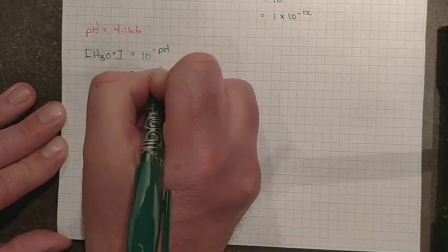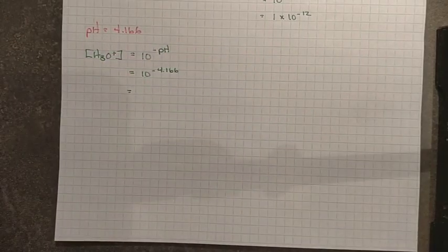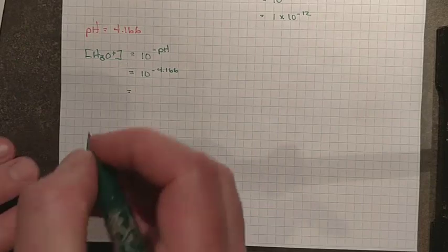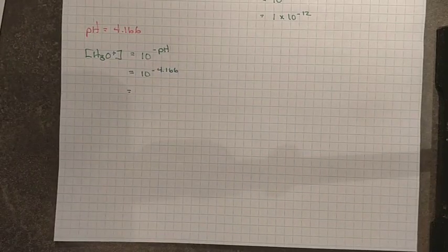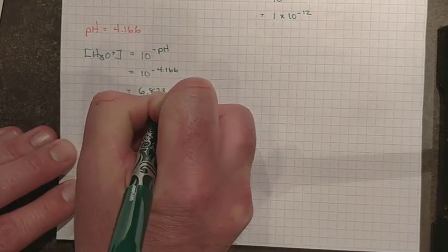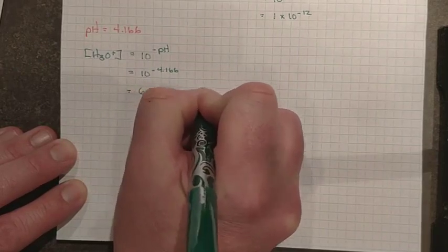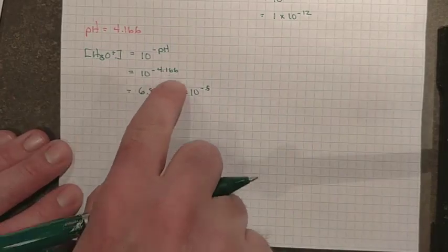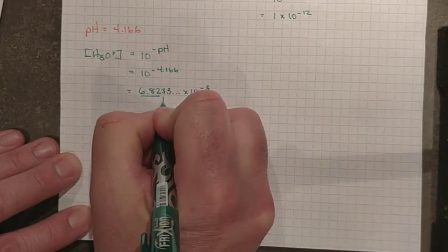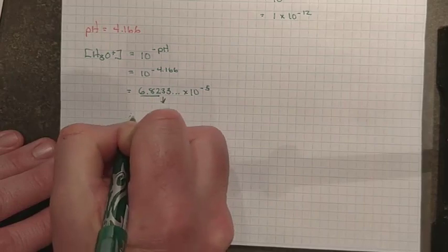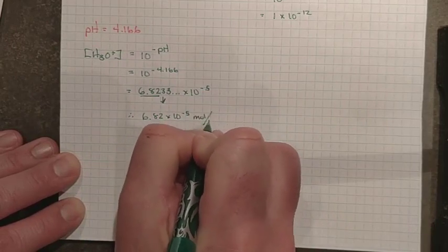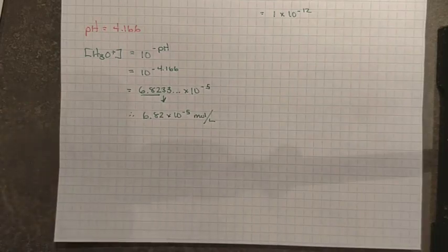10 raised to the negative 4.166. When I run it through my calculator, should be 10 raised to the power of 4.166. Forgot my negative. 10 raised to the power of negative 4.166 works out to a number of 6.8233 times 10 to the negative 5. Three significant digits in 4.166, so there's three significant digits there, and so that would round me down. My answer here would be 6.82 times 10 to the negative 5 moles per liter of hydronium.